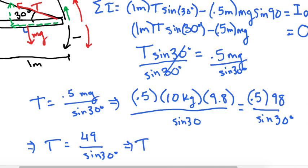So we know sine of 30 is one half. So 49 divided by 0.5 is 98. So T is a force, so we get it is equal to 98 newtons. Okay. Cool.